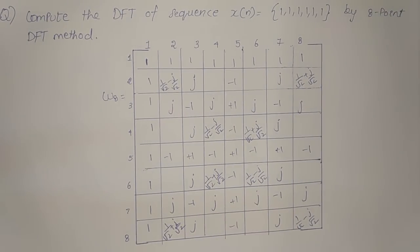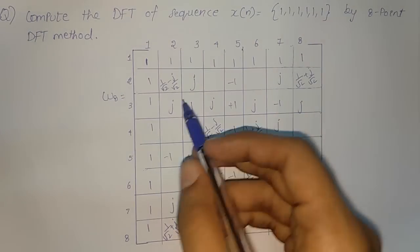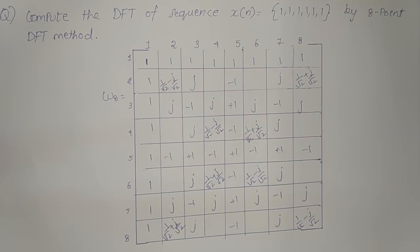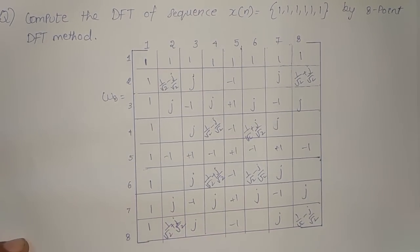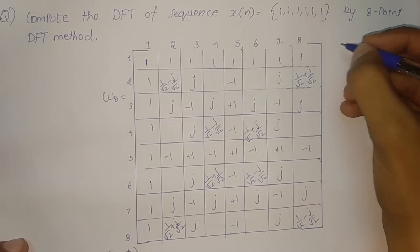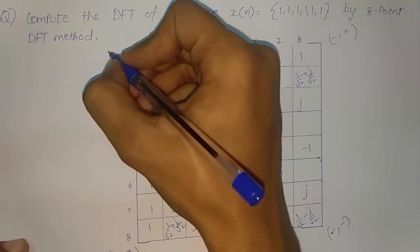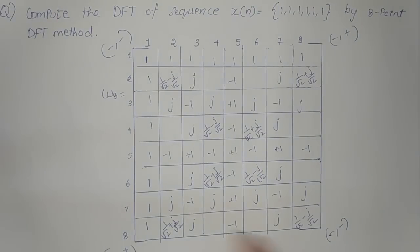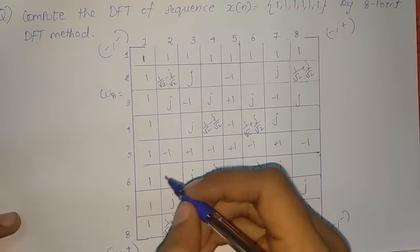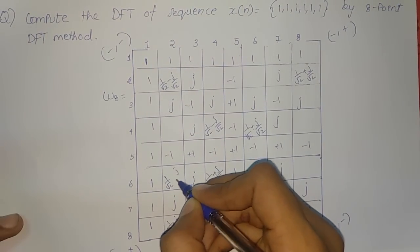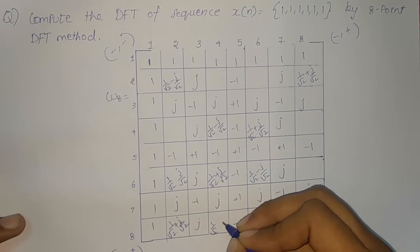Now in each of the remaining boxes there is a trick — it becomes complex. You have eight boxes left: 1, 2, 3, 4, 5, 6, 7, 8, and these boxes have to be filled using a trick. For this side you write minus plus, and for this side you write minus plus. You simply write 1 by root 2 and j by root 2.